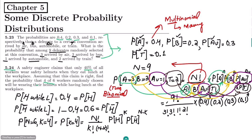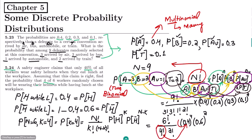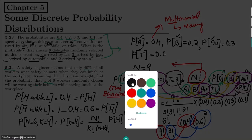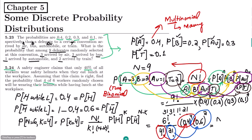Substituting the values: n is 6 factorial divided by 4 factorial times 2 factorial, multiplied by 0.4 raised to the power 4 and 0.6 squared. This first term corresponds to the helmet wearers and the second probability to those not wearing helmets. We can also write this generally as n factorial divided by class 1 factorial times class 2 factorial.